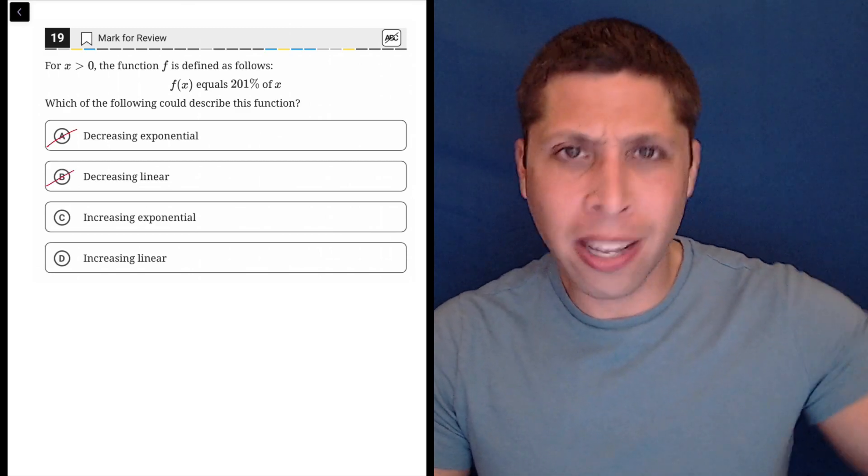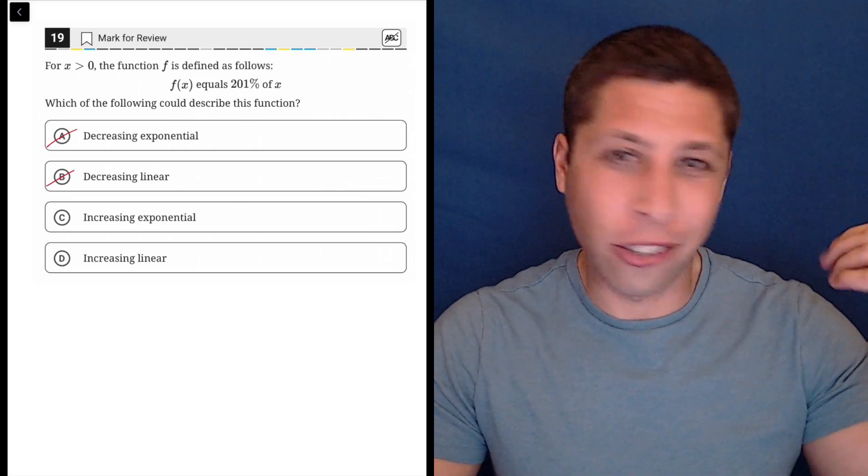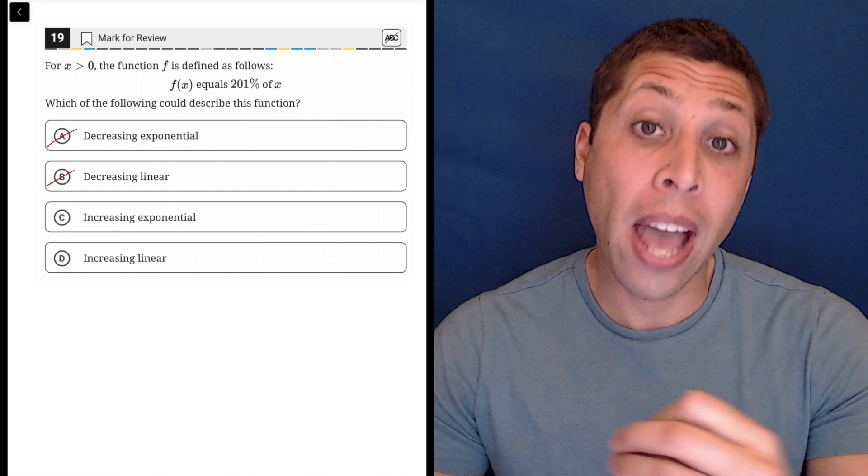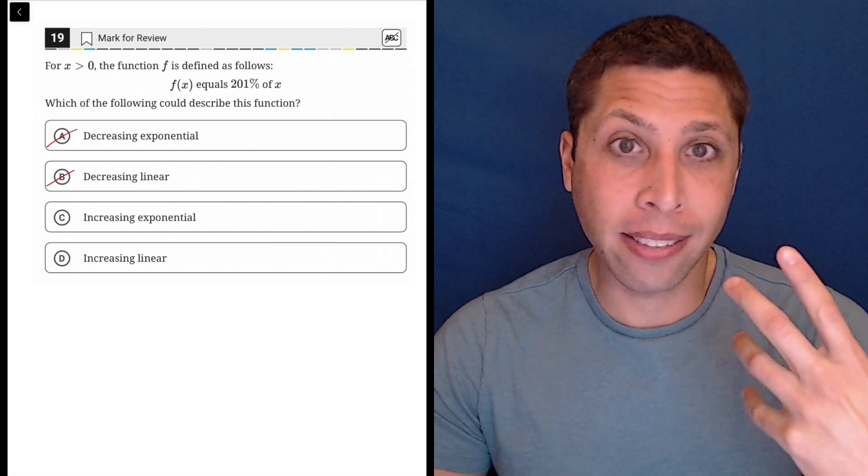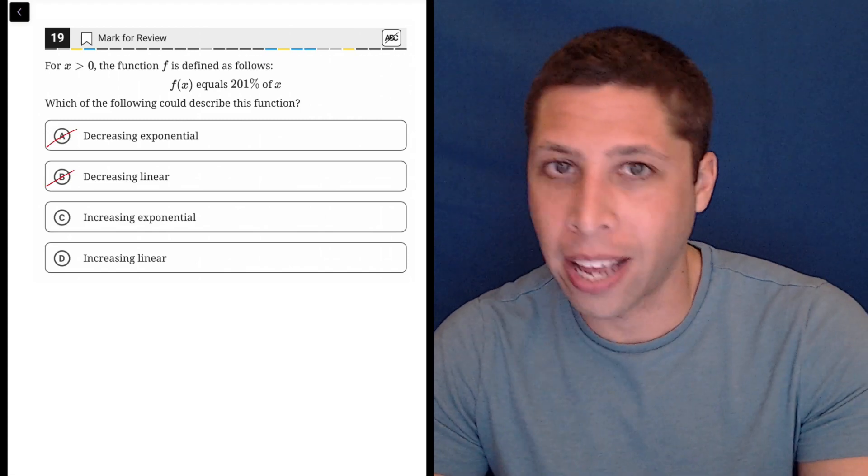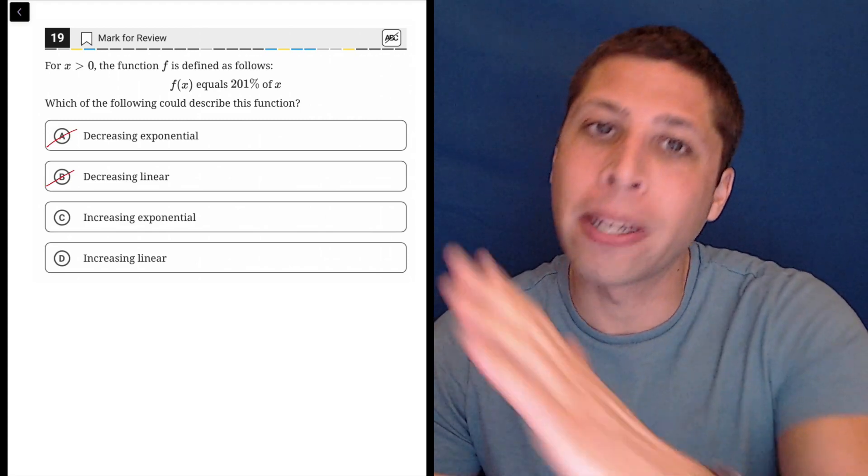Now, most of you, having done lots of SAT practice, obviously, and just knowing how these questions work, you associate percentages with exponentials because that's kind of how we talk about exponential equations. It's increasing by 5% every year, and so that's an exponential growth.